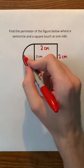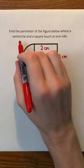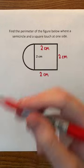Then, we just have to find this length. Remember that a semicircle is half a circle. Therefore, this length must be half the circumference of the full circle.